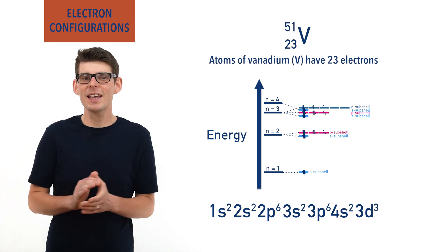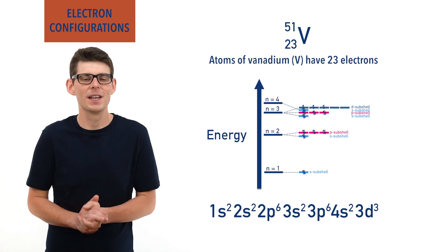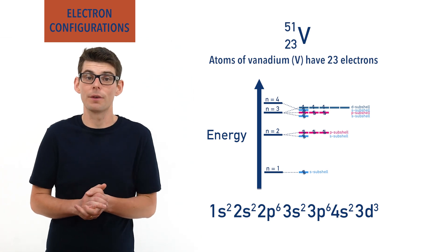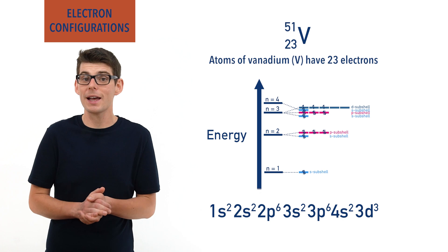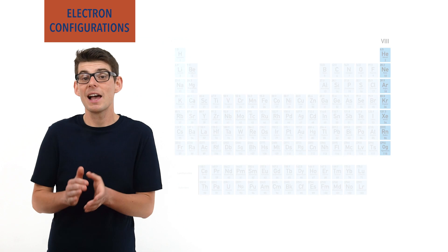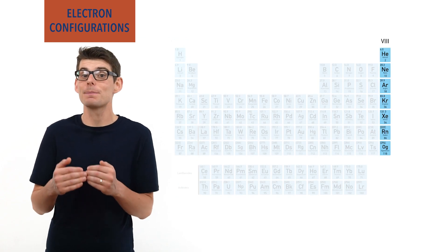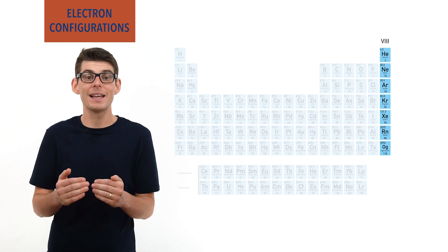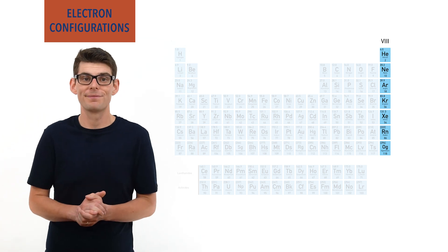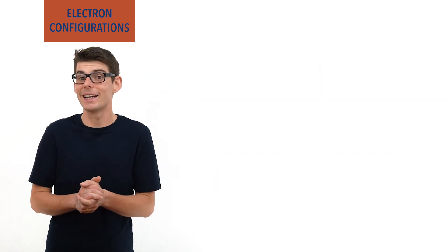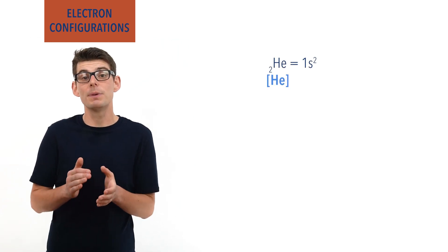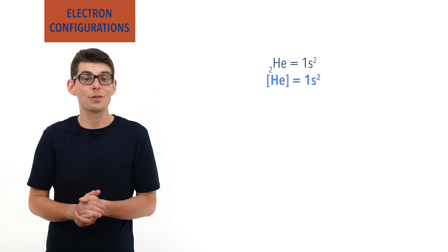These electron configurations can get pretty tiring to write out, and to make things faster, inner electron shells can be shown as noble gas electron configurations, with the element symbol of the noble gas in square brackets. This is because noble gases — group 8 elements — have full outer shells, and all elements in the next period in the periodic table have the same inner electron configuration as the noble gas at the end of the previous period. For example, helium has an electron configuration of 1s2, meaning [He] can be used to represent 1s2 in electron configurations.